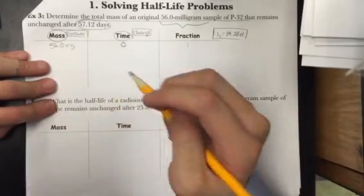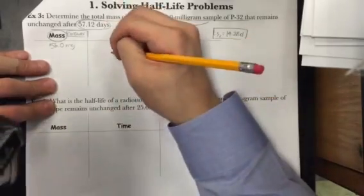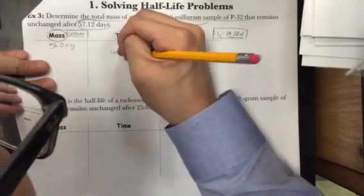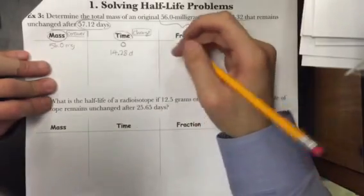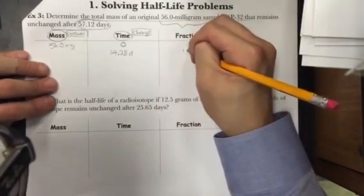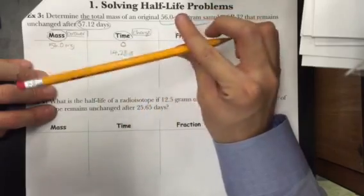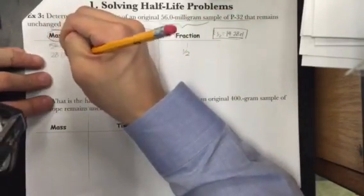Now, let's go through the half-lives until we reach 57.12 days. So for the first half-life, I let 14.28 days pass since only one half-life has passed. What I have to do with the fraction is halve it since one half-life has passed. So half of one is one-half. And I also have to halve the mass, so half of 56 is 28.0 milligrams.